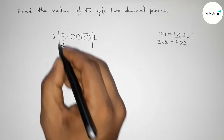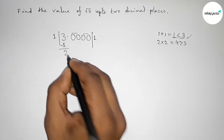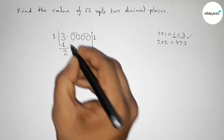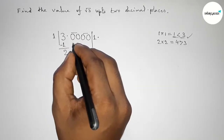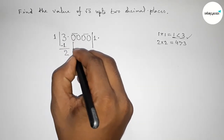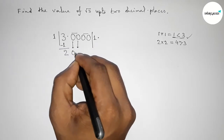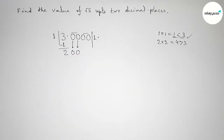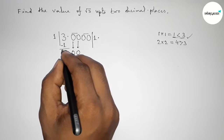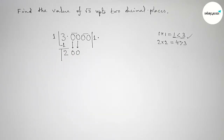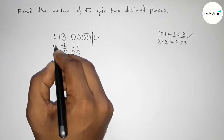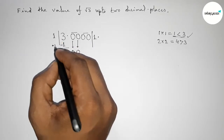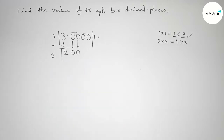Taking 1, writing 1 here. Now subtracting from 3, we get 2. Now write down the first pair of zeros, so write 20 here and draw a divisor line. Here the divisor digit is 1, so we add 1 to it — this gives us 2.